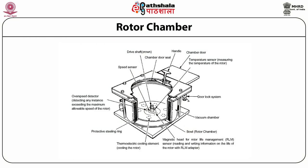The rotor chamber contains many components: thermoelectric cooling elements to control temperature, a protective steeling ring for protection, an overspeed detector, a speed sensor to measure rotor speed, a chamber door with seal, handles to open and close, a door lock system, a vacuum chamber, and a magnetic head or magnet sensor for the rotor. These are the major components of the chamber.